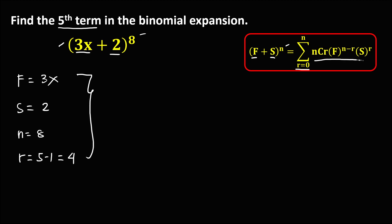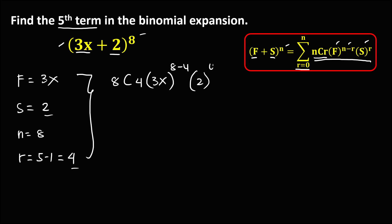To find the fifth term using the formula, we have n choose r — so 8 choose 4 — times the first term 3x to the power n minus r, where n is 8 and r is 4, times the second term, positive 2, to the power r, which is 4.